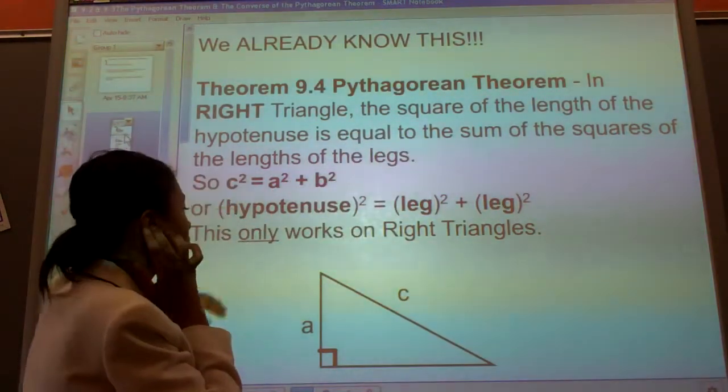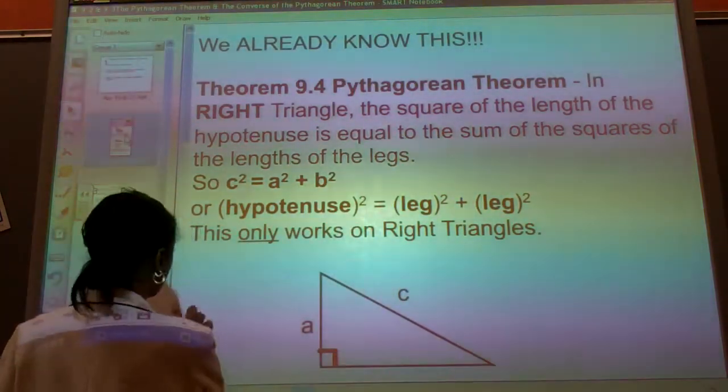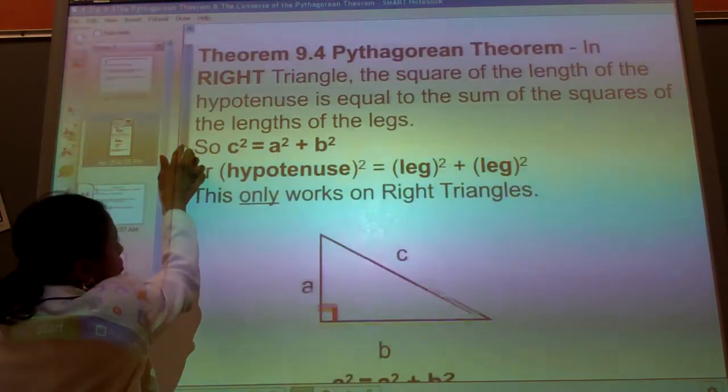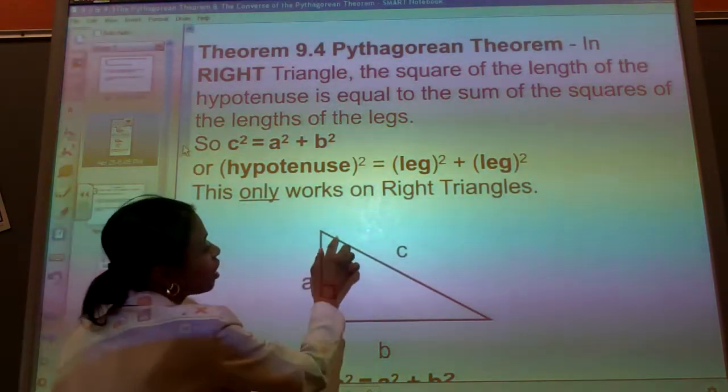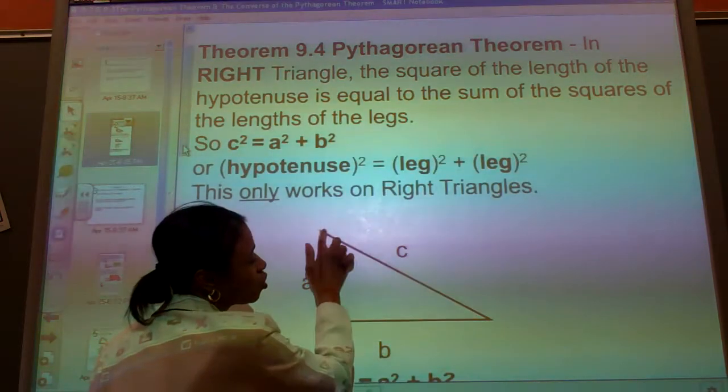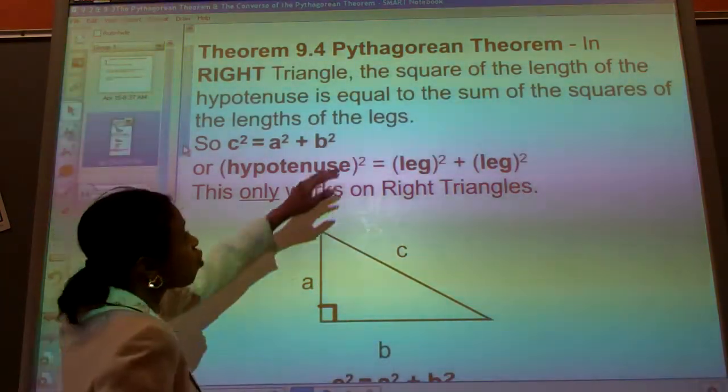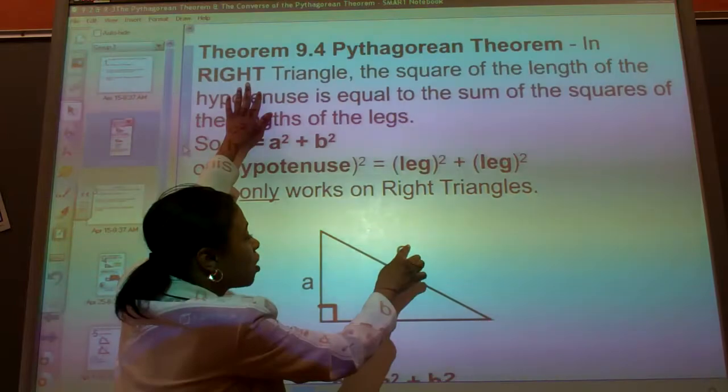The square length of the hypotenuse. So in this particular triangle here, in triangle ABC, this triangle here, leg C is the hypotenuse. So the square length of the hypotenuse, the square length will be C squared.